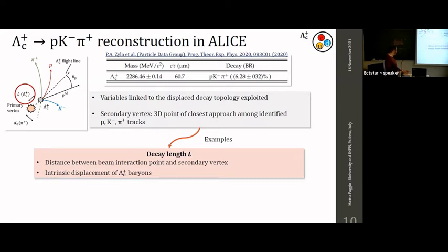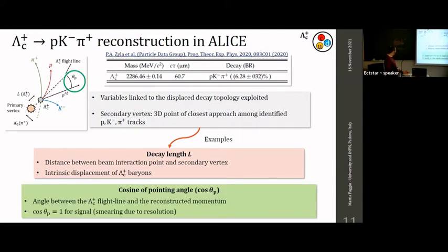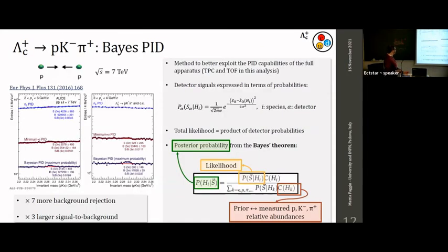The topological variables help separate the Lambda_c signal from the combinatorial background, since Lambda_c baryons are intrinsically displaced. Another example is the cosine of the pointing angle, where the pointing angle corresponds to the angle between the flight line of the Lambda_c and the reconstructed momentum direction. For signal, these are expected to be aligned, so the cosine of the pointing angle peaks at one.